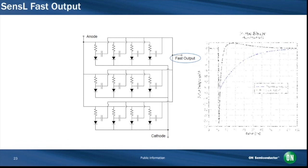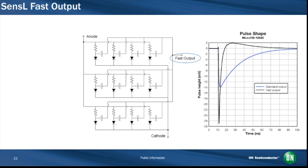The plot here shows a typical output pulse from the fast output, compared to one from the standard output from the anode cathode line. The fast output signal is particularly suited to fast timing measurements, using the ability to clearly distinguish the arrival time of the first photon in the pulse.